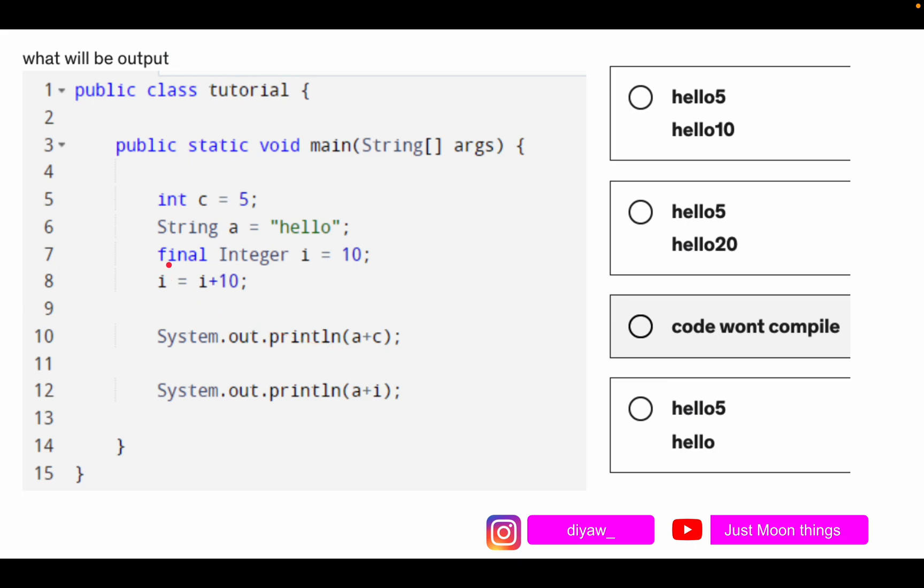If you look at line number 7, that is final integer i equals to 10, here the variable i is declared as final. So once you create a variable with final, you cannot modify or reassign. In line number 8 we are trying to reassign a new value and we are also modifying it. That is the reason the code won't compile.